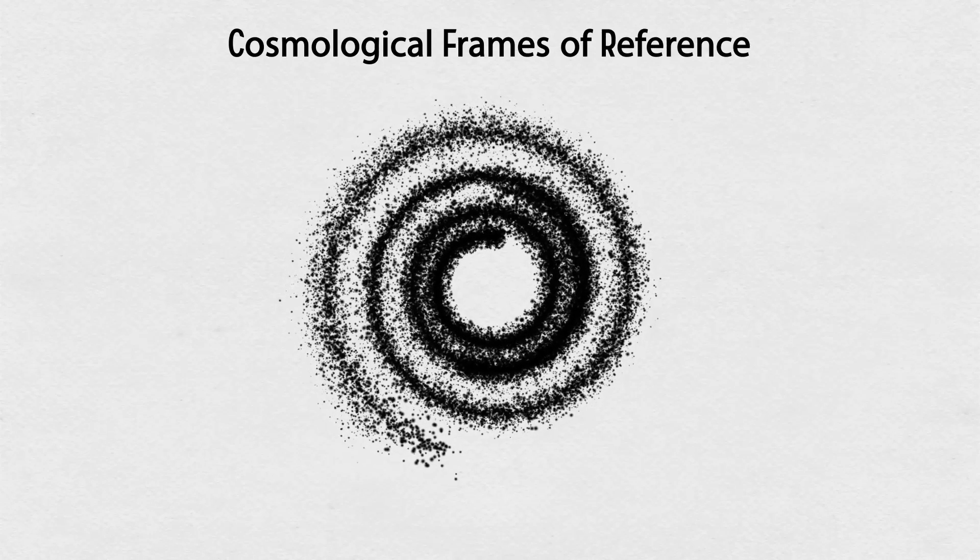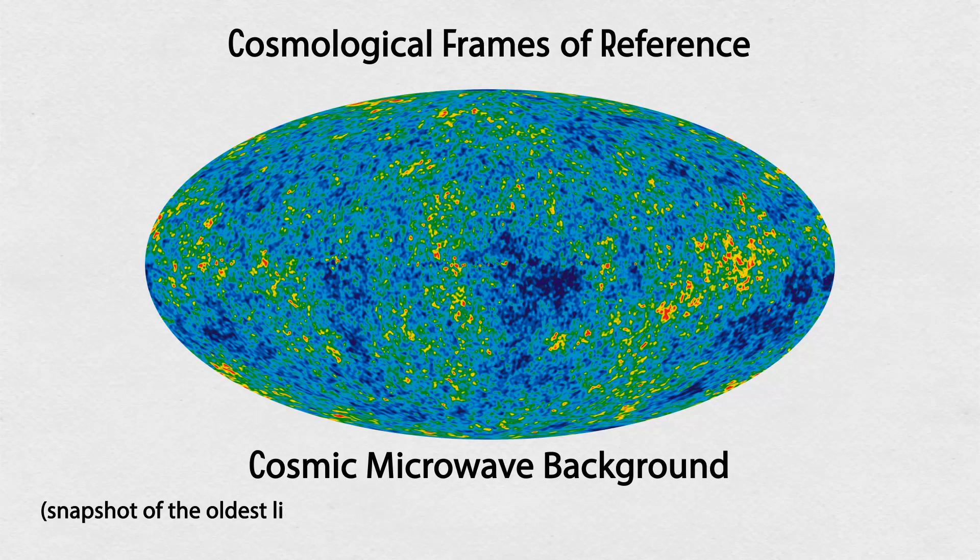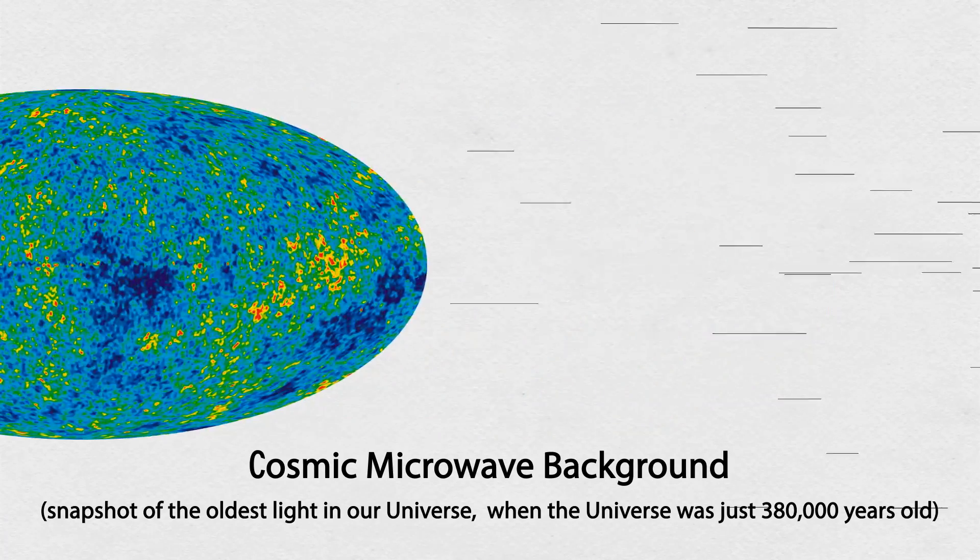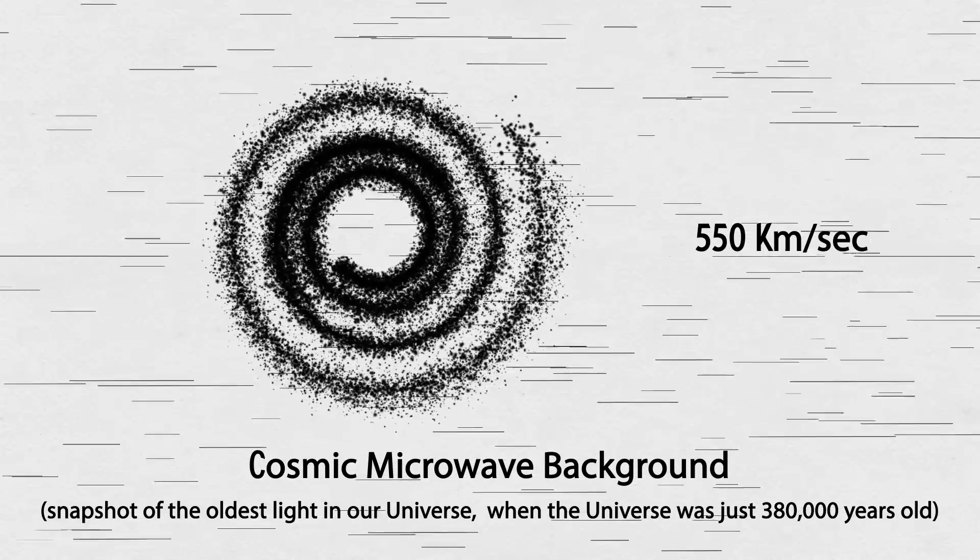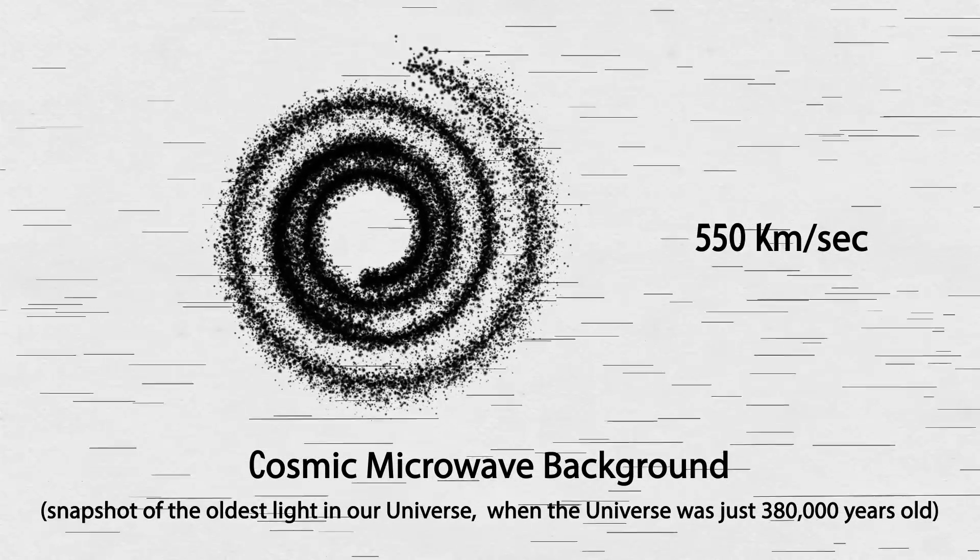But the galaxy does have a velocity with respect to the cosmological frame of reference, like the cosmic microwave background. The Milky Way is moving at 550 kilometers per second with respect to the photons of the cosmic microwave background.